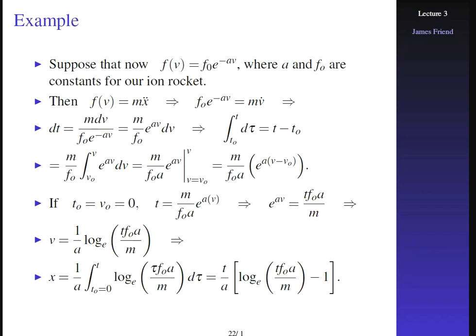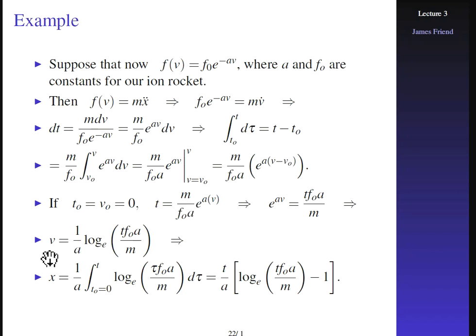We can invert this to find velocity as a function of time. e^(Av) equals T·F₀·A divided by M, and taking the log of both sides gives V = (1/A) · ln(T·F₀·A / M). Integrating this again gives the position: x = T/A · [ln(T·F₀·A / M) − 1]. Alternatively, using the chain rule form F(V) = M·V·dV/dx leads to the same result directly.